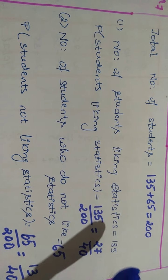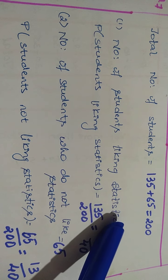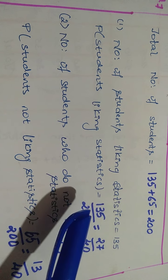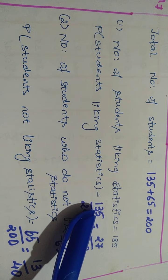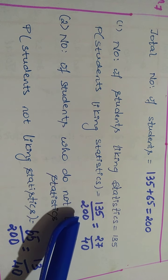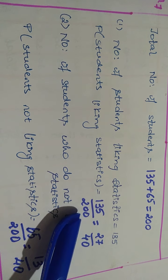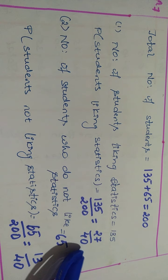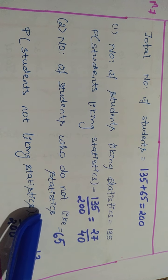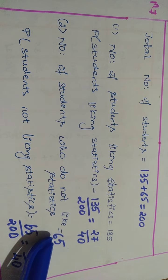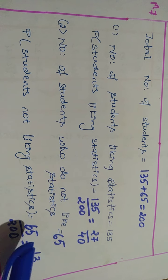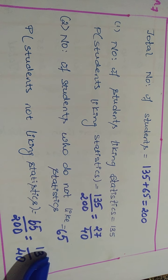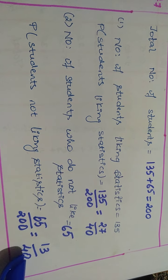Here, the same I have written. Total number of students I have added first. Liking statistics, probability is 135 by 200. On cancellation, you will get 27 by 40. Number of students who does not like statistics was 65. On cancellation, you will get 13 by 40.